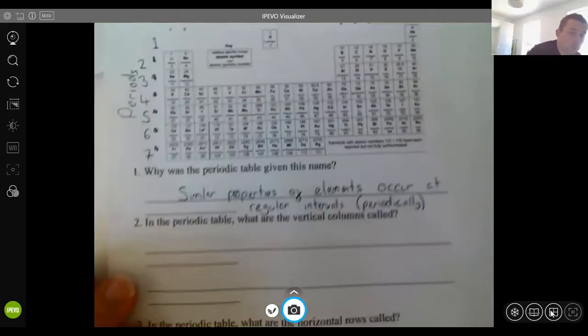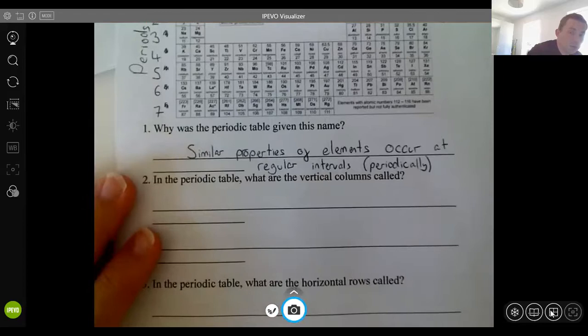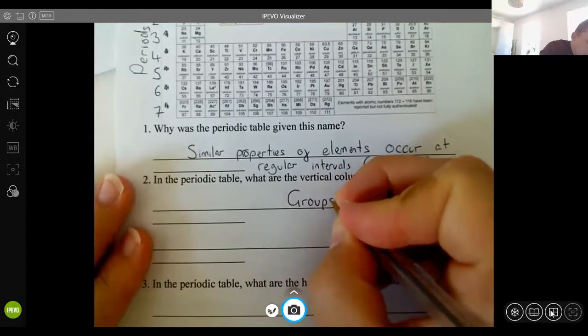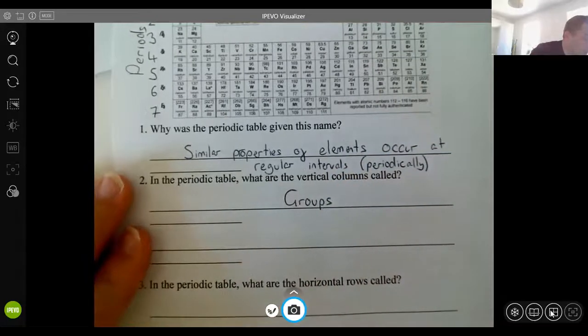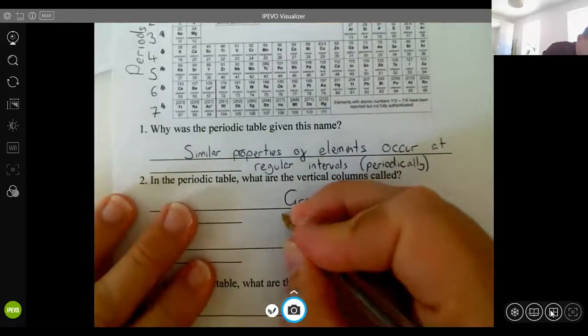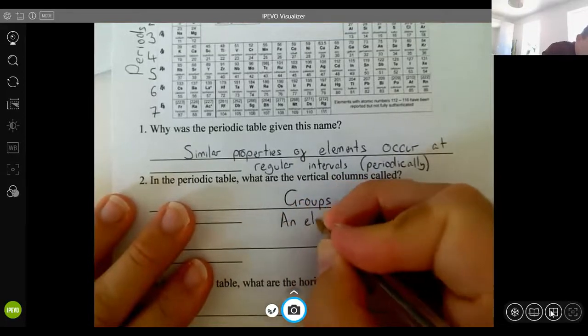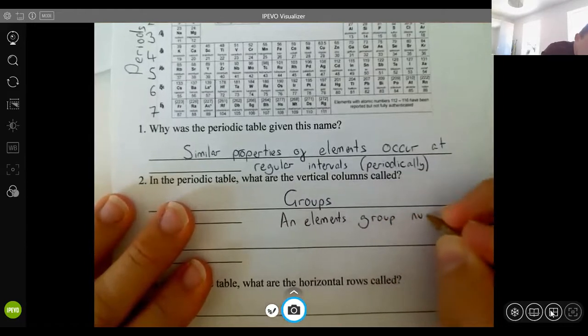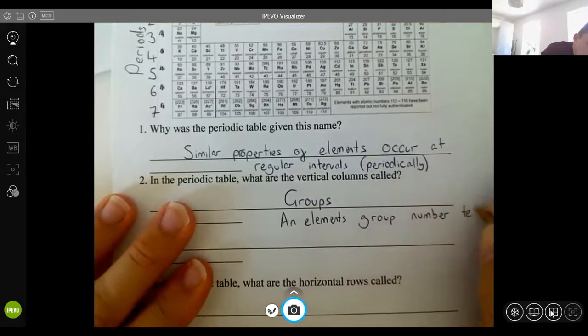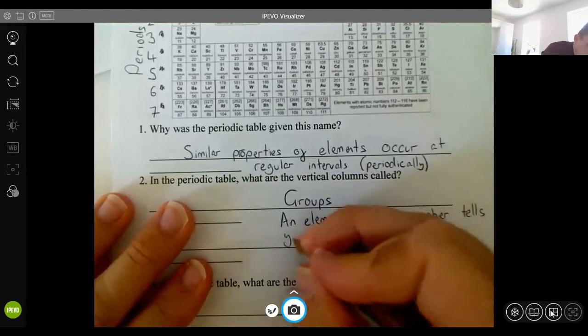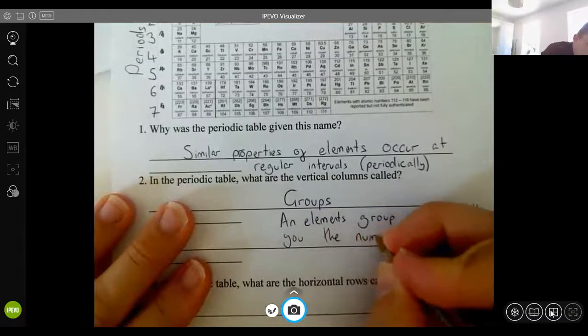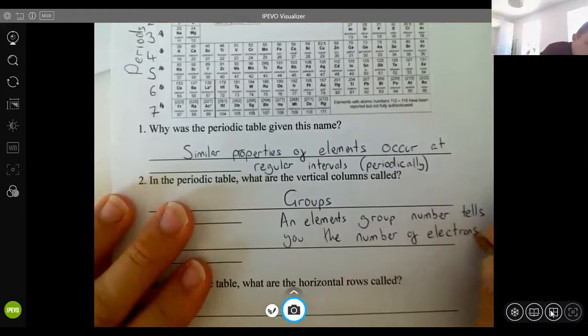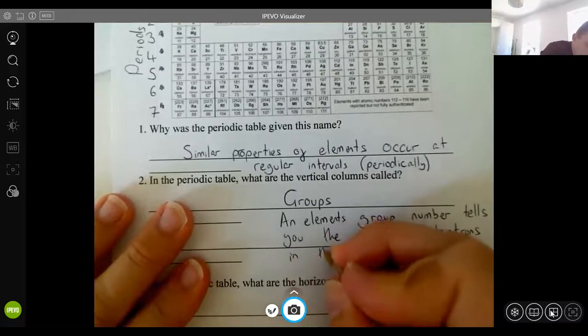So question two, what are the values called? And we've already done this. They are called the groups. Now, why that's really important is because an element's group number tells you the number of electrons in the outside shell.